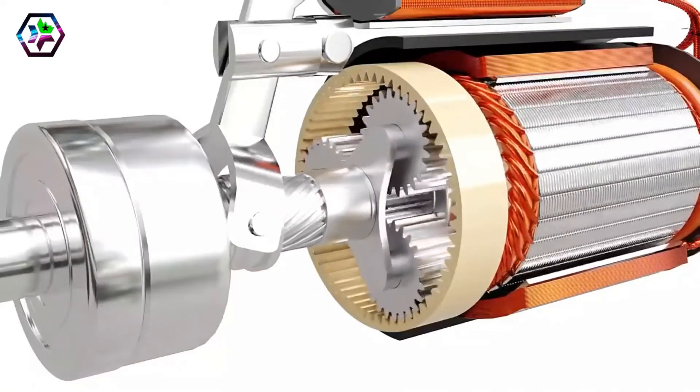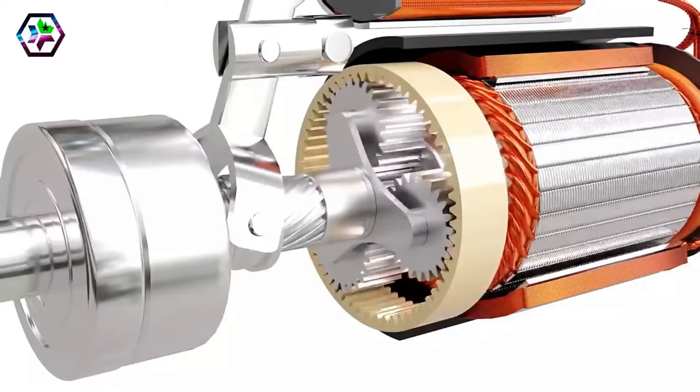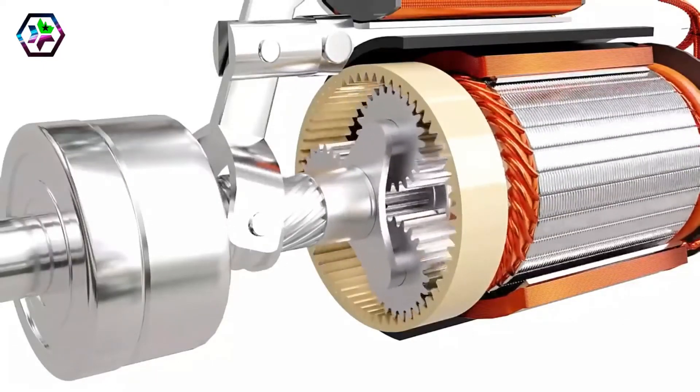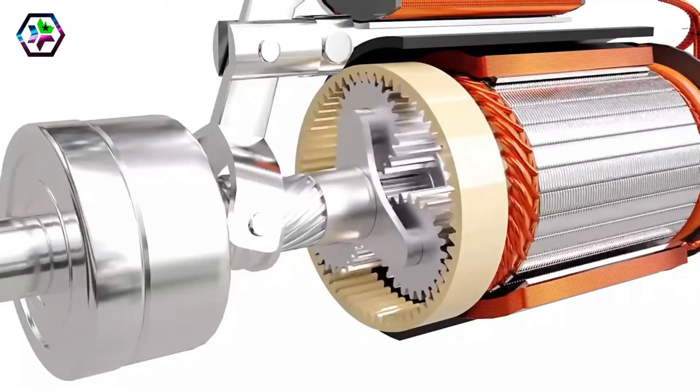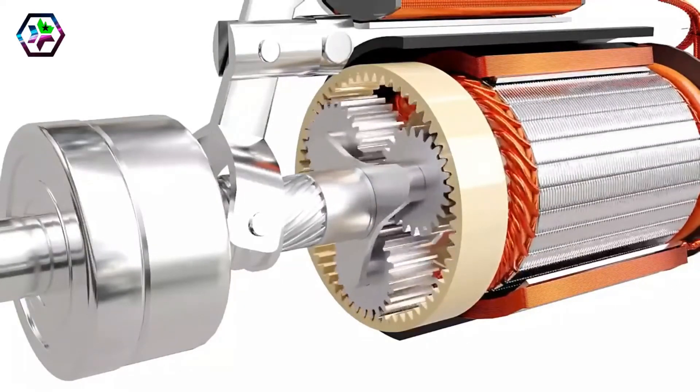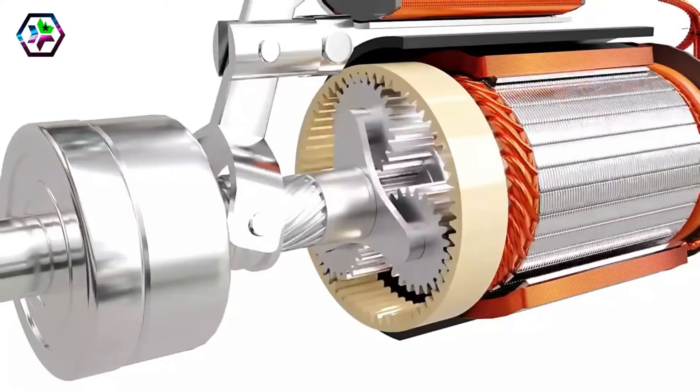In starters, the ring gear is fixed, the sun gear is the input, and the planet carrier is the output. For the setup shown here, the gear ratio is 7 to 1. The combined gear reduction results in enough torque to spin the engine.